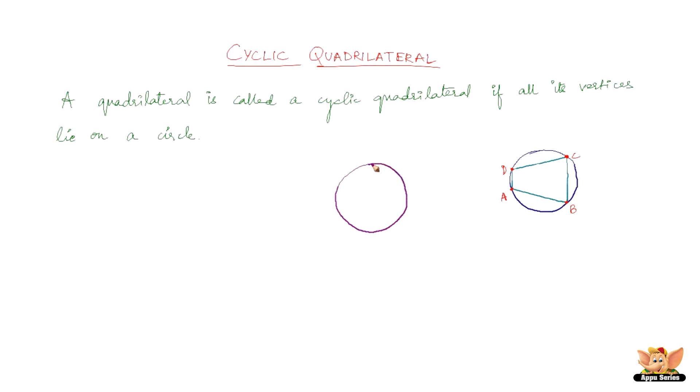Just like this. So here we have a circle. This is a four-sided closed figure. It is a quadrilateral. But is this a cyclic quadrilateral? No, it is not a cyclic quadrilateral.